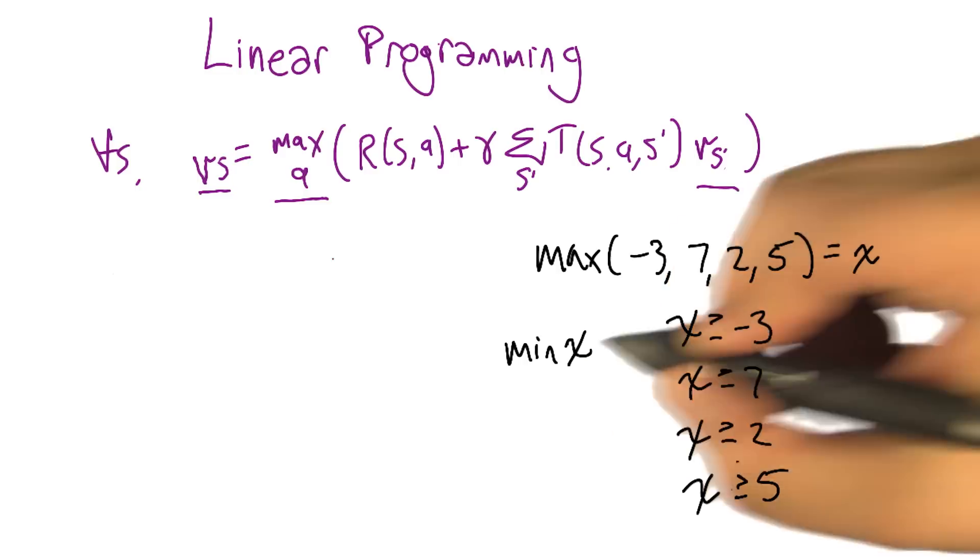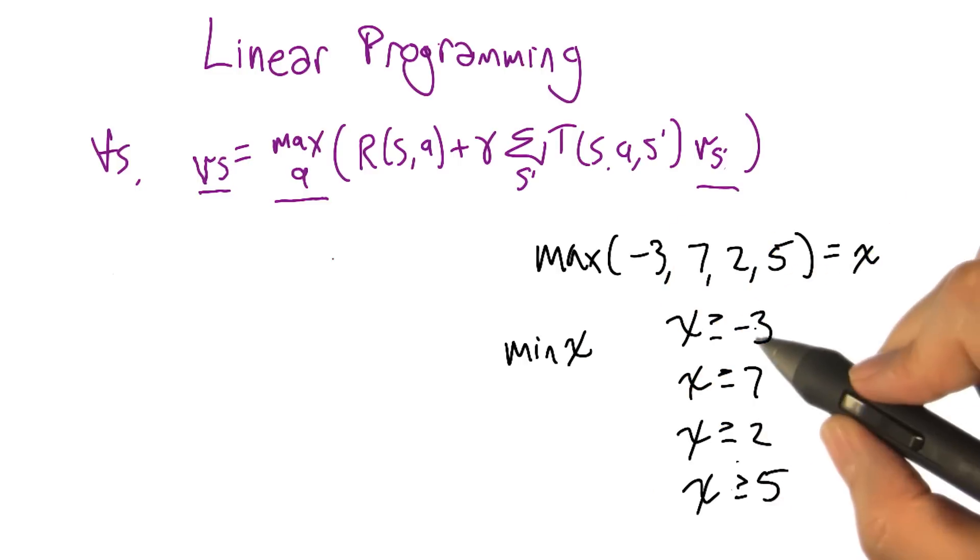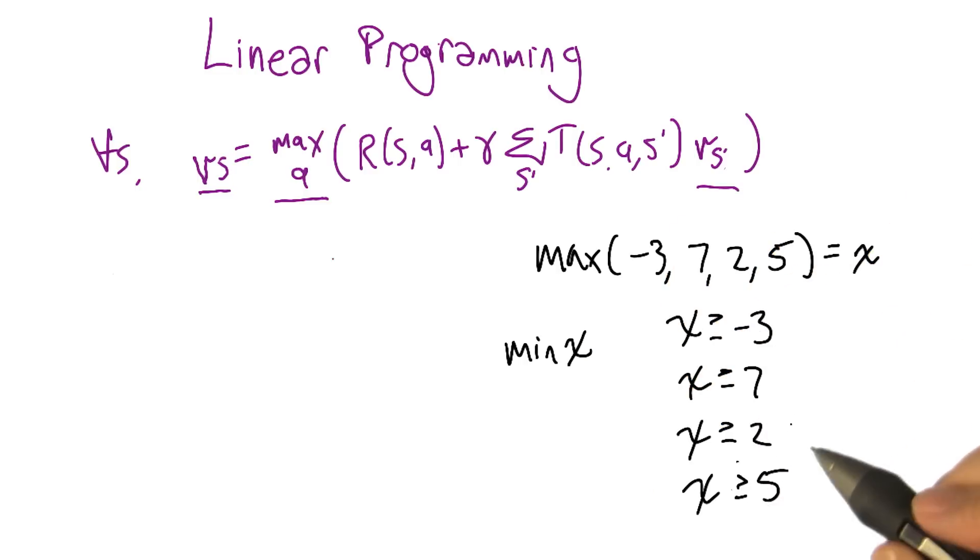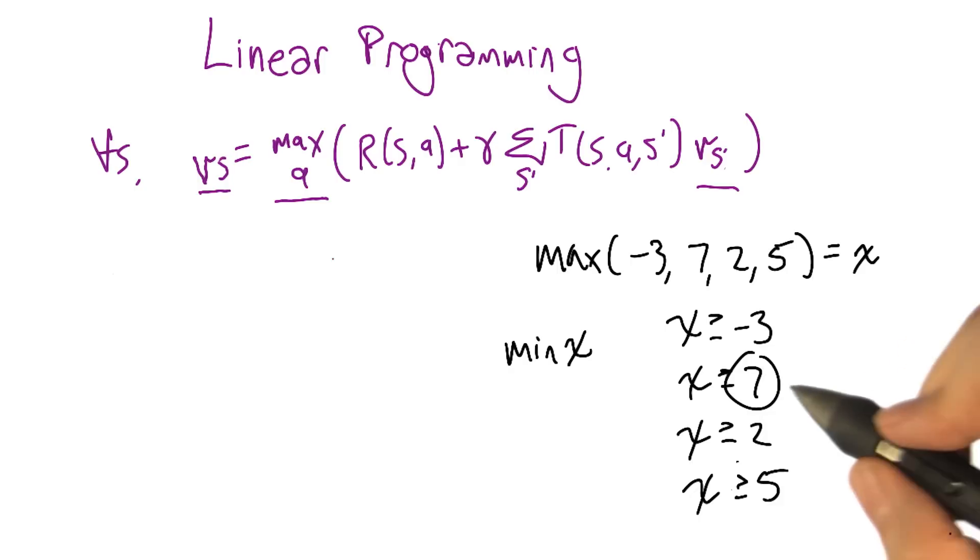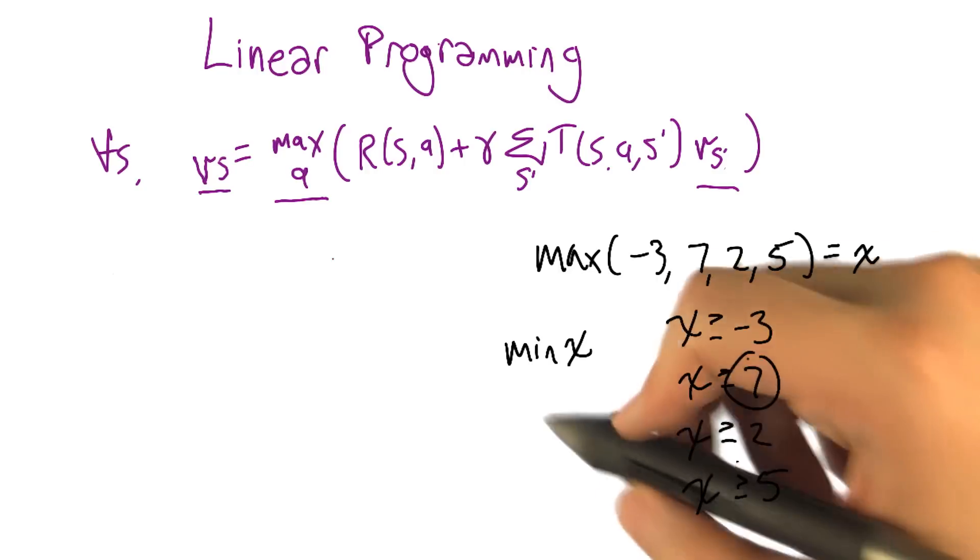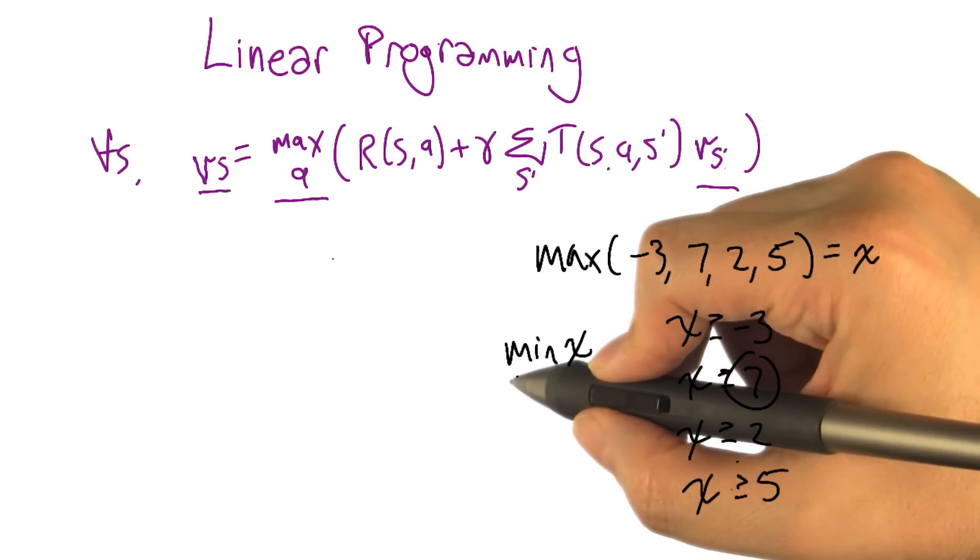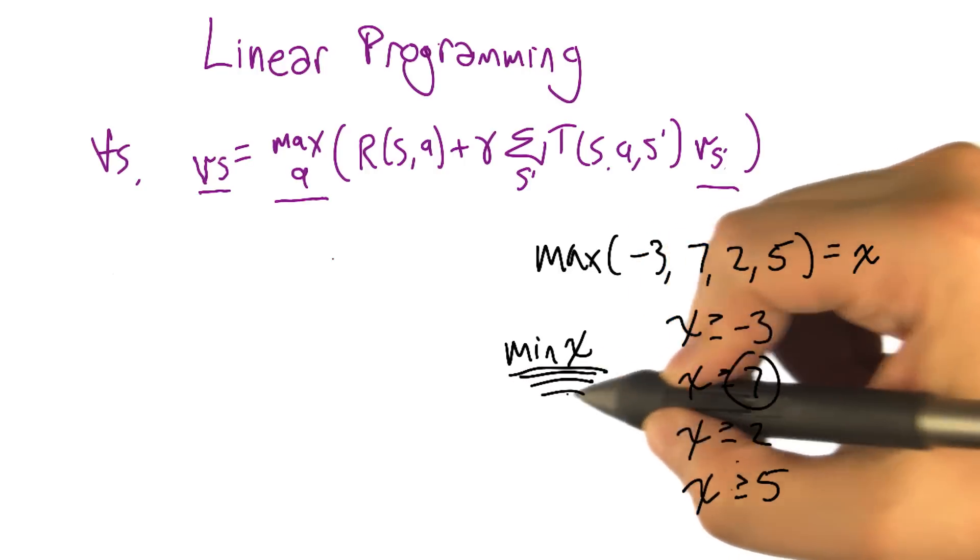We want the x that's as small as possible while still satisfying all these constraints. In this case, that's going to have to be 7. Right, because 7 is bigger than all the other ones, and you can't get any smaller without getting smaller than 7. Right, and of course, min is a linear operator, so we're good. No, no, no. Min is an objective function. This is a linear objective function. This is okay. So that's what we're going to do.